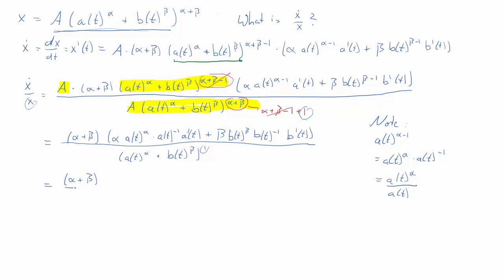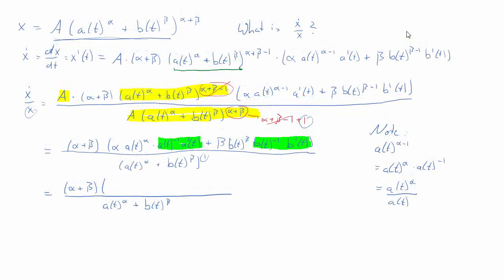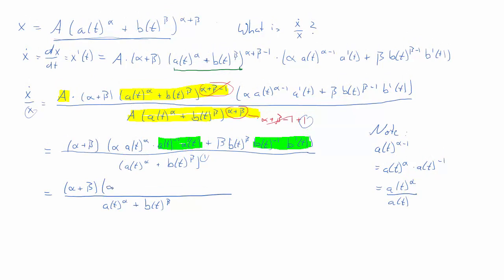We did this because we now have convenient terms: a(t)^(−1) times a'(t) and b(t)^(−1) times b'(t), which are the growth rates of a and b. So what remains in the parentheses is α times a(t)^α times (ȧ/a) plus β times b(t)^β times (ḃ/b). Again we end up with the growth rates of a and b. The function x is a function of a(t) and b(t), and the growth rate of x is ultimately a function of the growth rates of a and b.